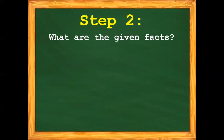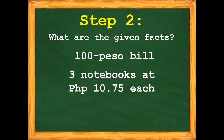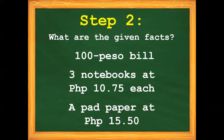Step number two: what are the given facts? One hundred peso bill. Three notebooks at 10 pesos and 75 centavos each. And a pad paper at 15 pesos and 50 centavos.